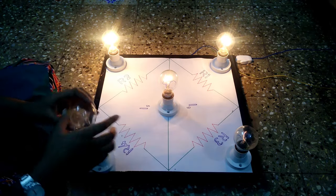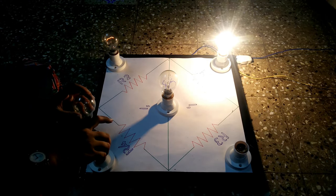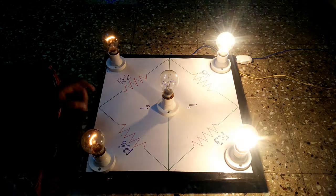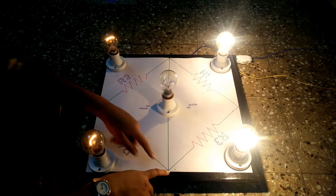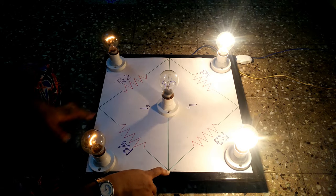But when I change the bulbs back to the original position, all the four bulbs glow and this condition is a balanced condition. So, as usual, no current flows through this path and the bulb does not seem to glow.